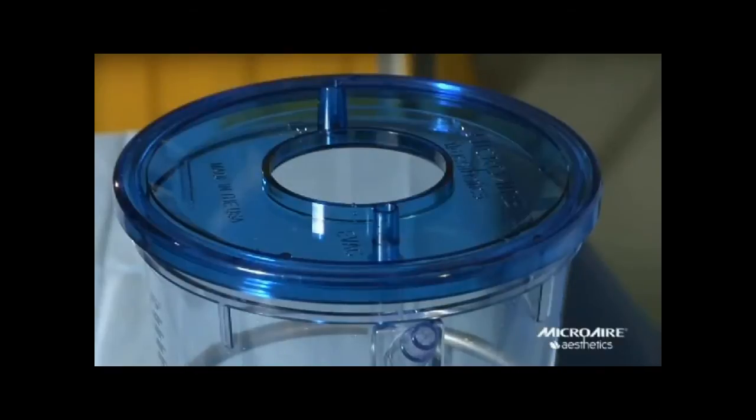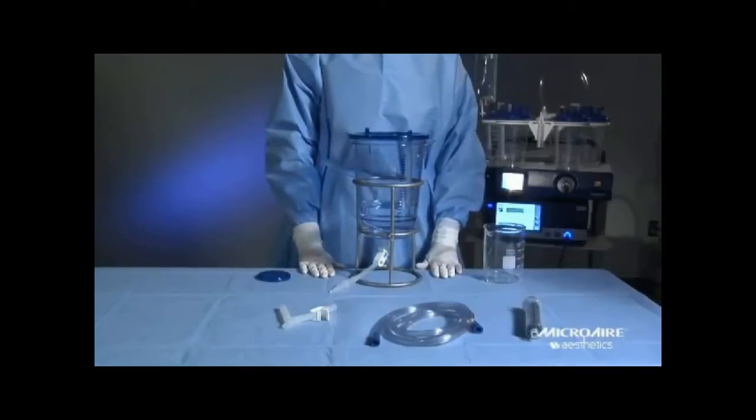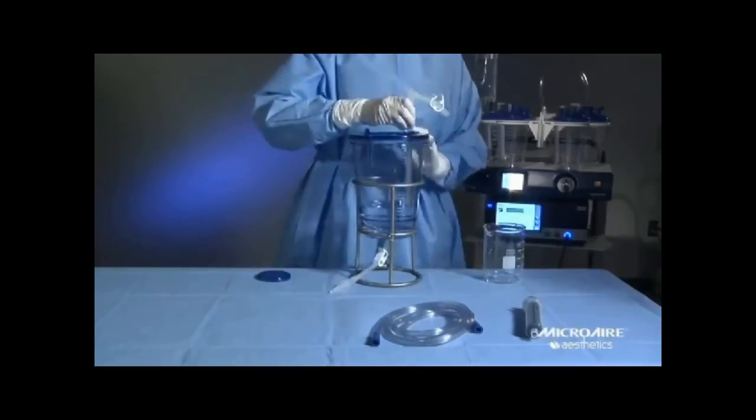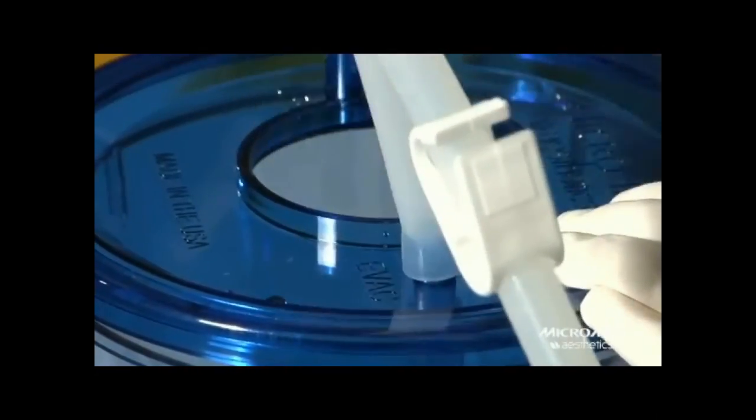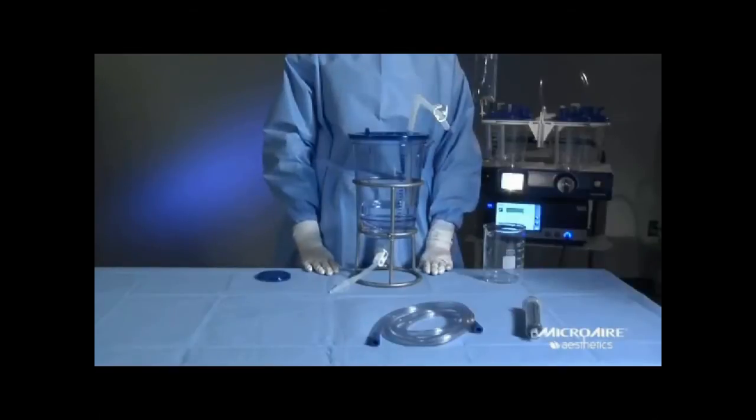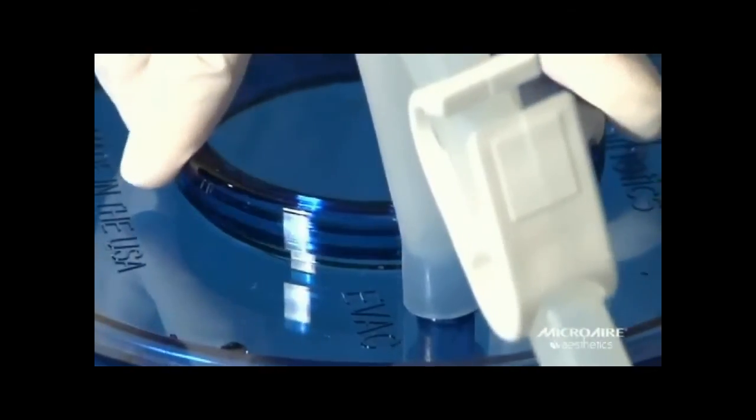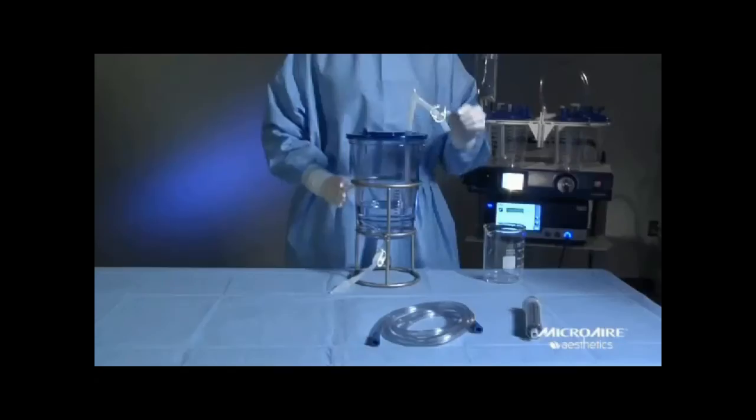Attach the manifold. Place the open tube onto the port labeled evac. You will see it lines up with the evacuation tube that runs through the filter. Secure the center cap. Attach the other tube of the manifold to the side port of the canister marked clamp.